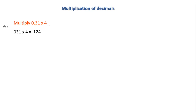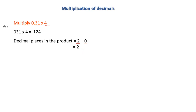Next step: count the number of decimal places in the given numbers. In the first number there are two decimal places; in the second number there are none, so decimal places in the product equals 2 plus 0, which is 2. Hence I will convert this product to two decimal places, giving 1.24.